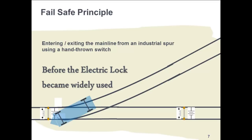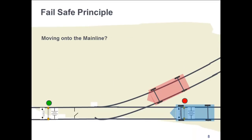The electric lock avoids these potential situations. The electric lock, in conjunction with a timer, electrically verifies that the signals have allowed trains in the vicinity to pass through or stop safely. The electric lock prohibits the throwing of the switch until a train that may have already entered the nearest track circuit has either passed through or stopped safely.